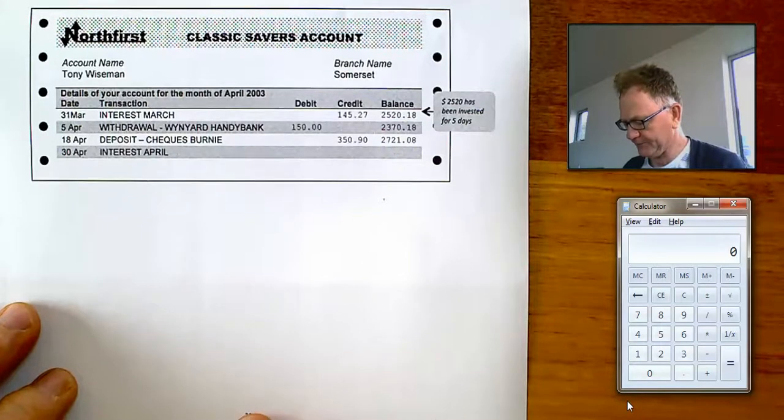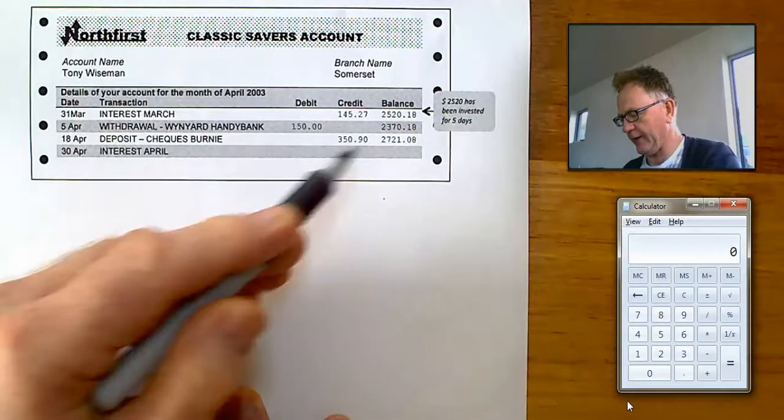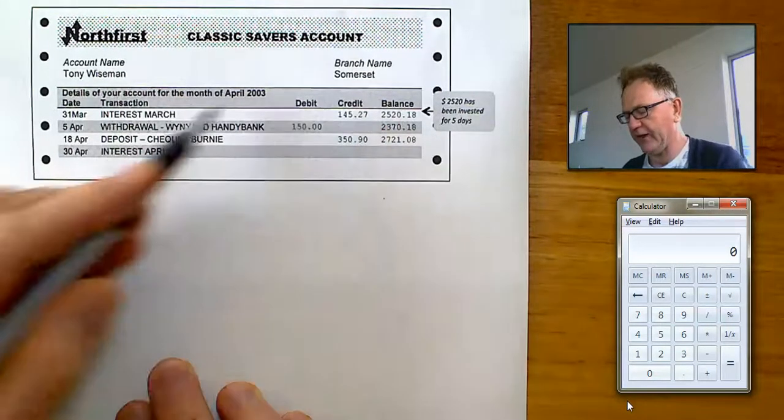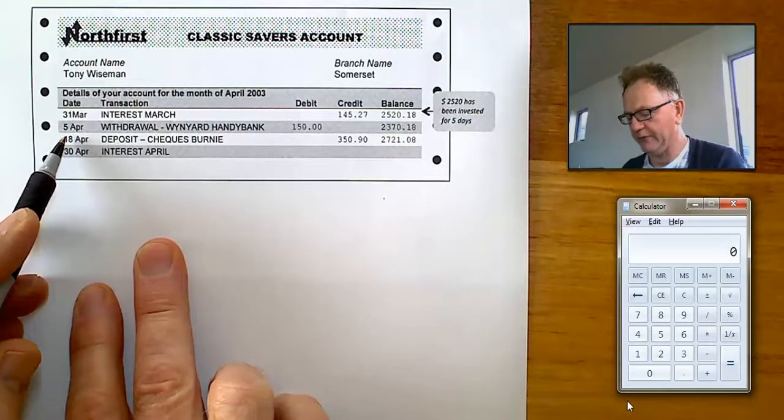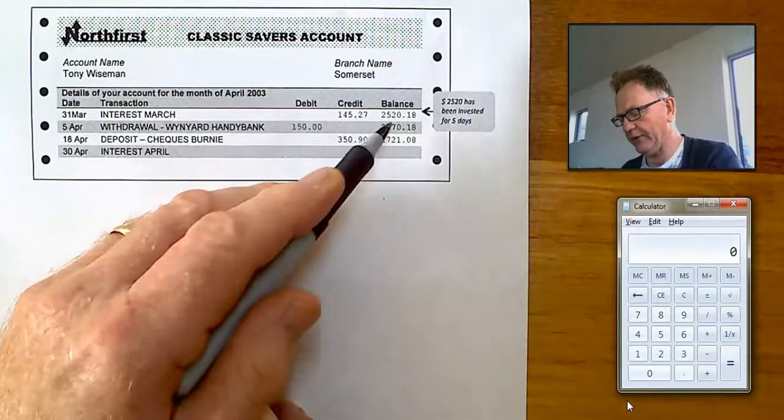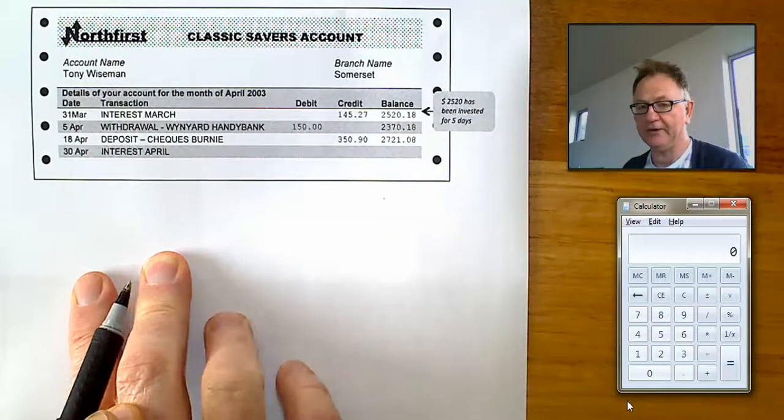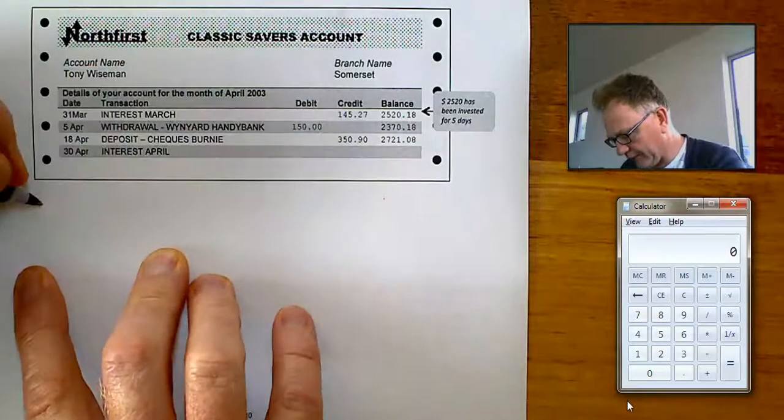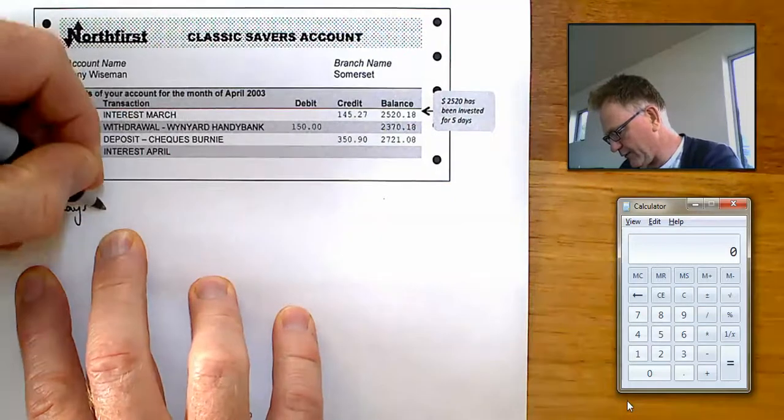So, at the end of the March, the balance was $2,520.18. That didn't change until April the 5th. So, that will mean there are five days when the balance was this much. We can use I equals PRT to work out the interest for that little period of time. So, five days with a balance.